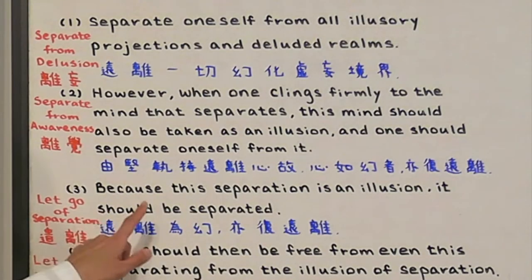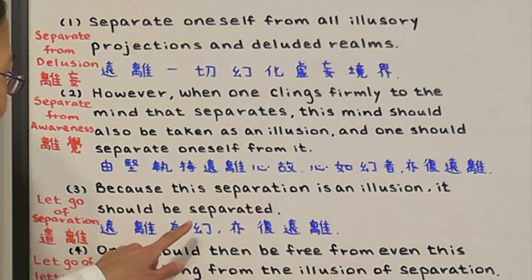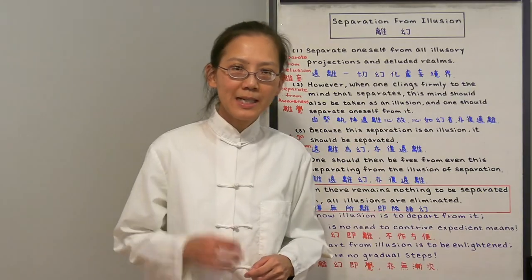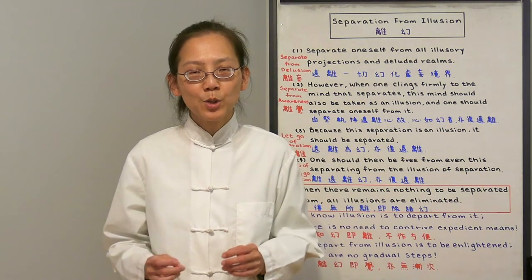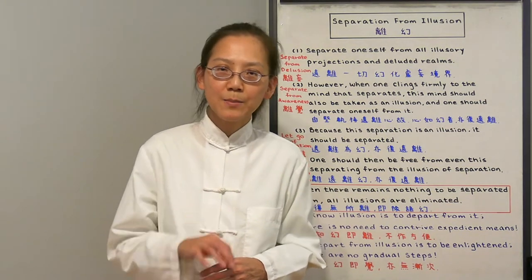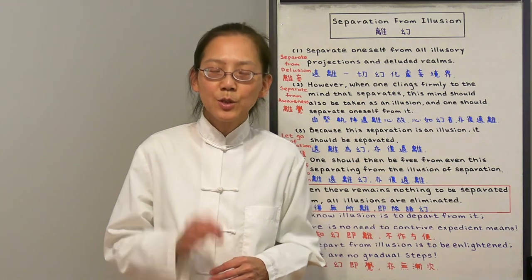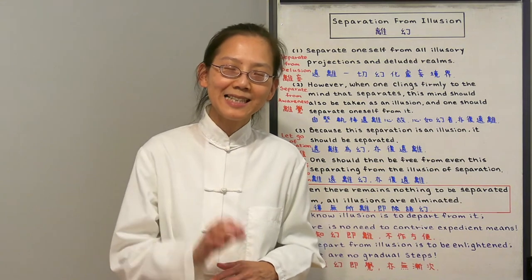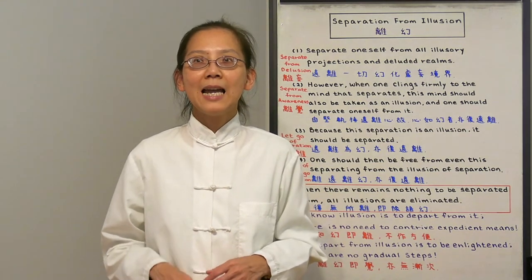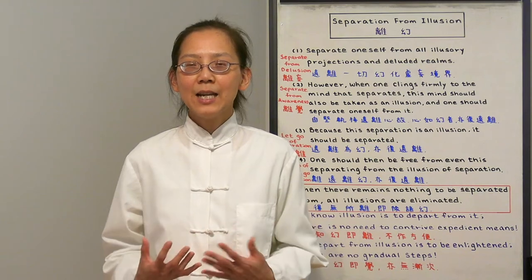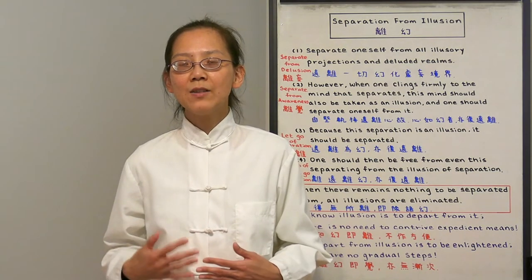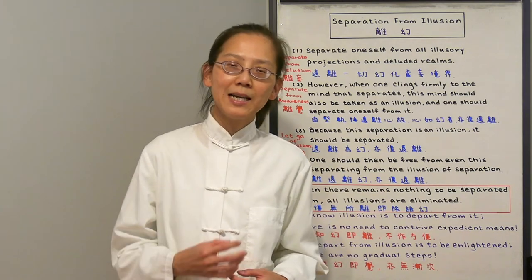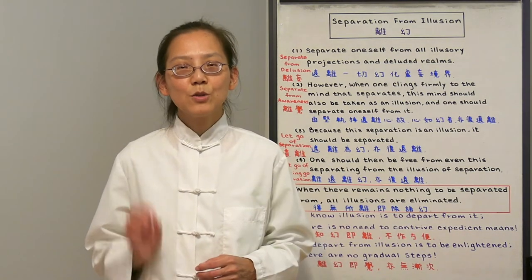Step 3: Because the separation is illusion, it should be separated. The separation we used above should be separated as well, because it is only a Dharma tool and we should not be attached to this Dharma tool — it is also illusory. So there is no set Dharma for anyone. Do not be attached to your practice either. For example, 'I have to chant 10,000 Amitabha a day' or 'I have to meditate for 5 hours in order to be a good practitioner.' If you are attached to your Dharma, it is also ignorance.